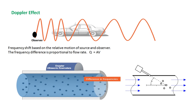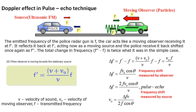In the simple case where the observer is moving towards the stationary source, the frequency observed is f' = (v + v₀) × f / v, where v is the velocity of sound, v₀ is the velocity of the moving observer, and f is the transmitted frequency. In our case, the ultrasonic flow meter using the Doppler effect employs the pulse echo technique.